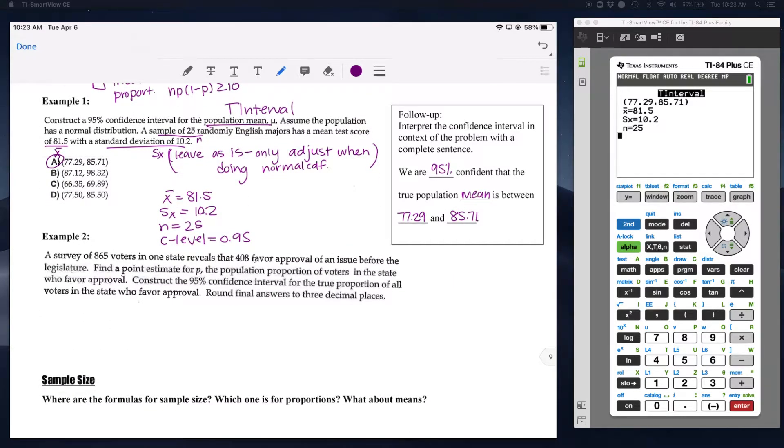Let's go to the next one. A survey of 865 voters in one state reveals 408 are in favor of the approval of an issue before a legislator. Find the point estimate P for the population proportion. Notice all of a sudden we've got a proportion here. Construct a 95% confidence interval. When they're talking about the point estimate P, P is simply our X divided by N. So the number of people in favor divided by the total number of people we're looking at. Your calculator will give you this output as well. Our point estimate is 0.472. So this should be like the center of our interval.